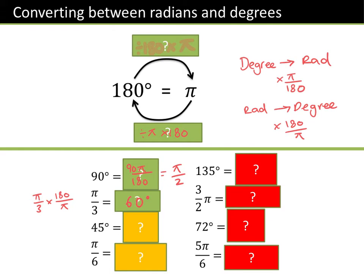Very quickly, can you fill in the rest? So 45 degrees is going to be π over 4. π over 6 is 30 degrees. 135 degrees is 3π over 4. 3 over 2 π — that's 270 degrees. 72 degrees? That's 2π over 5. And 5π over 6? That's 150 degrees.